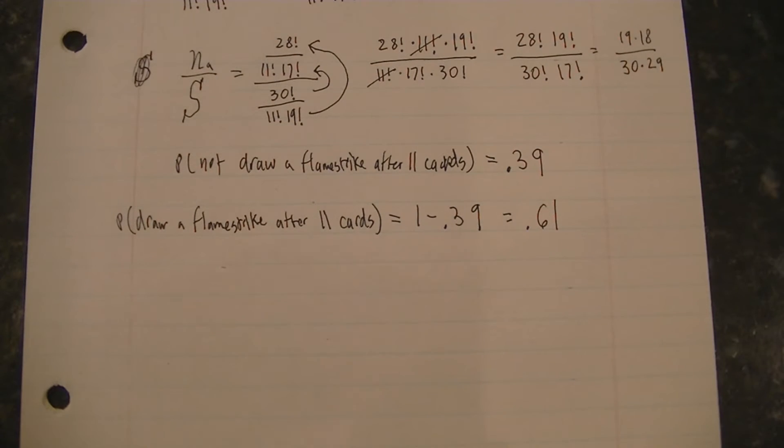So don't be surprised if you get flamestriked on turn 7. Next I'll discuss a formula that makes calculating these probabilities even easier.